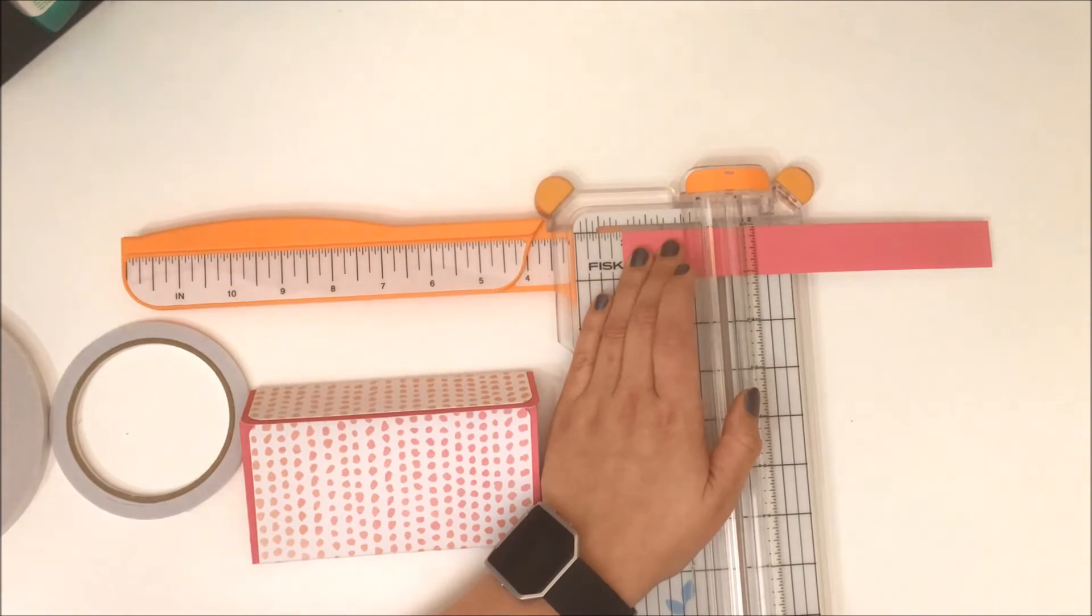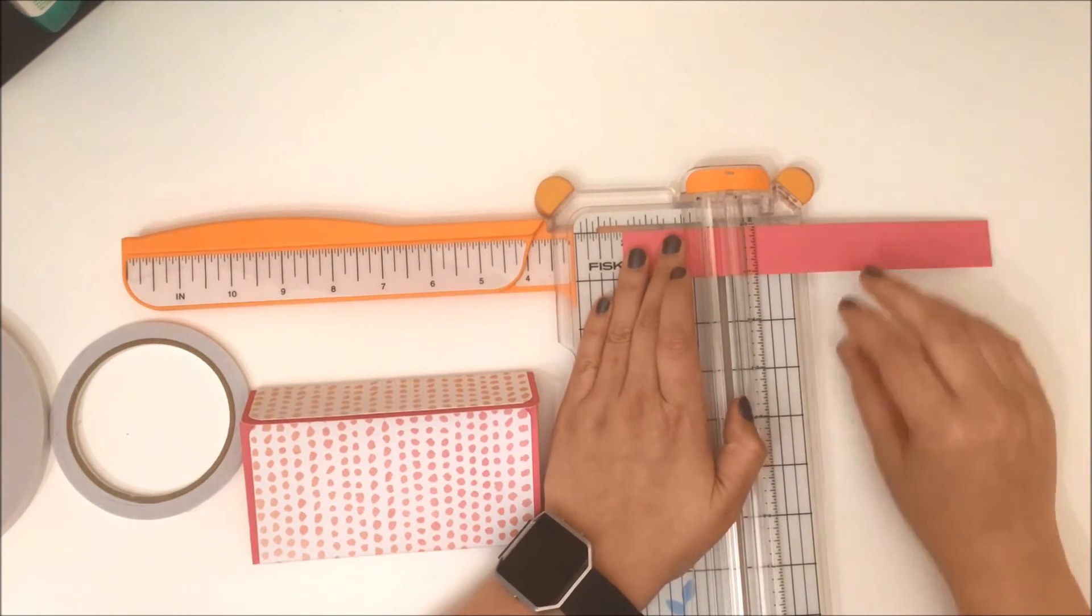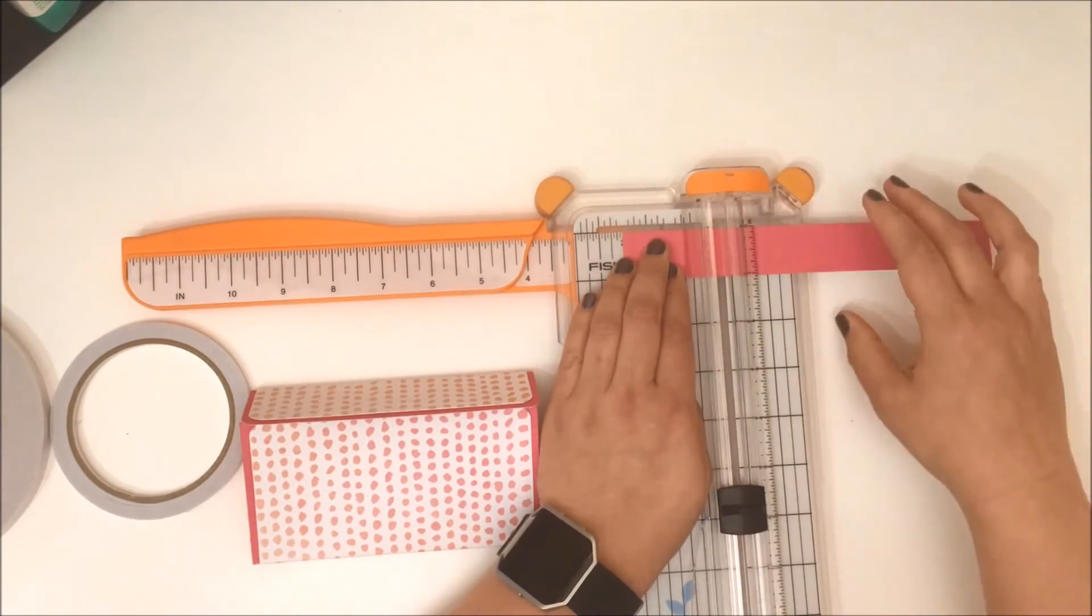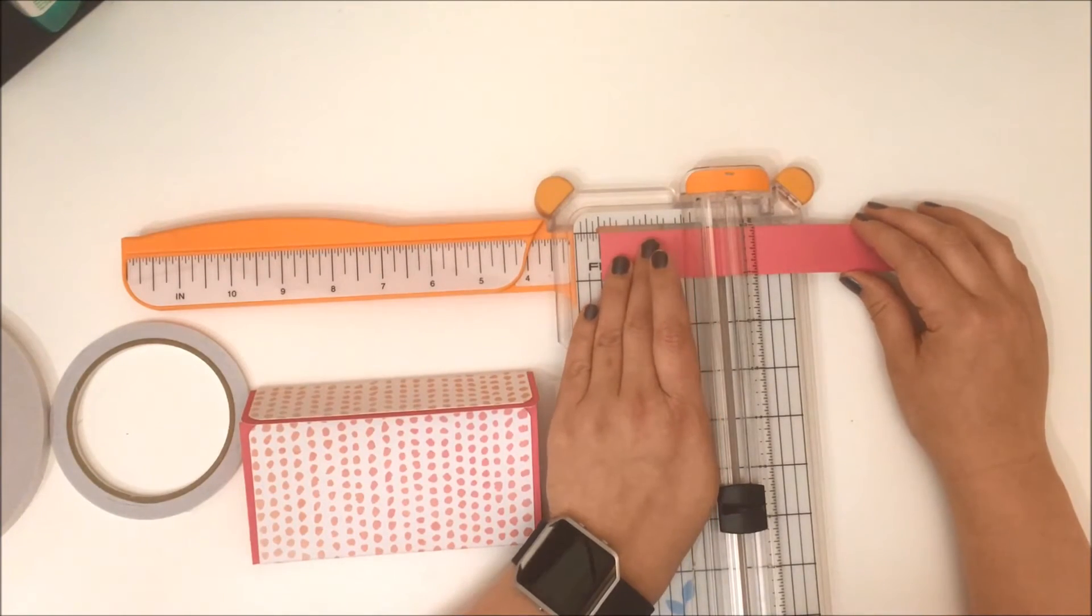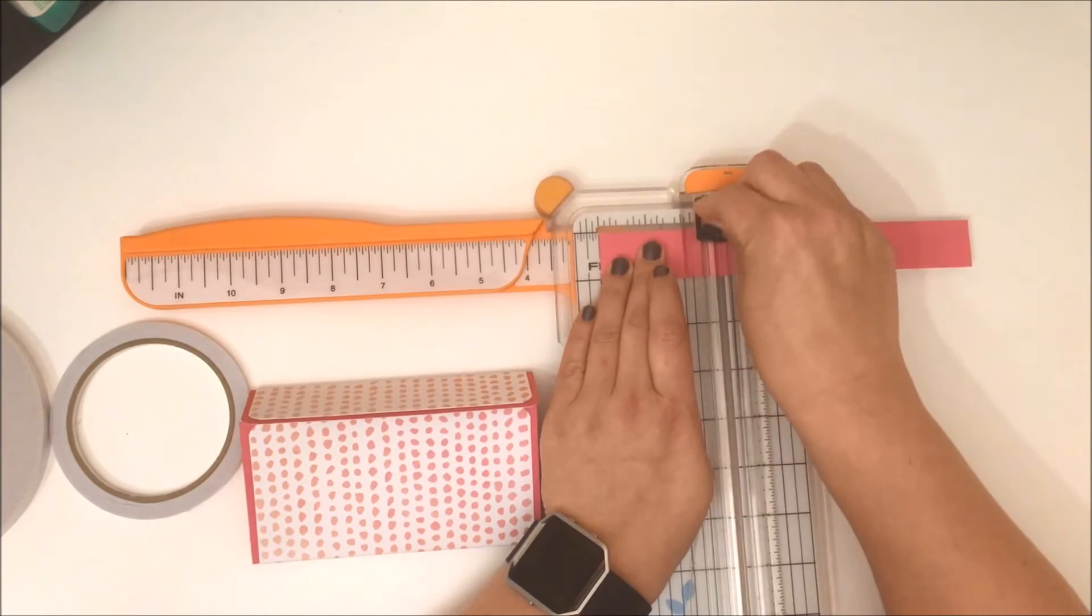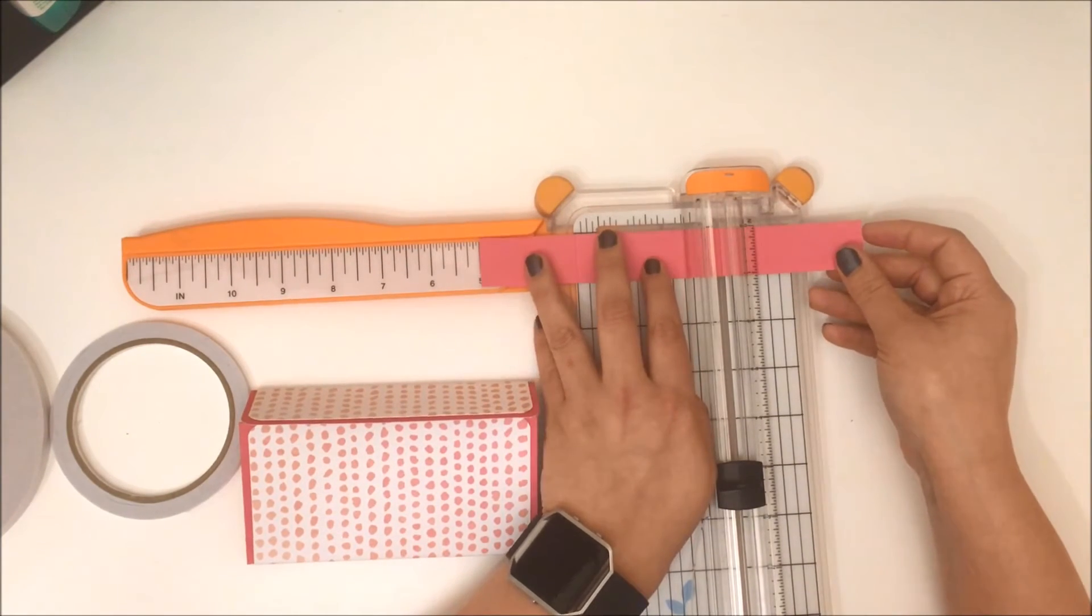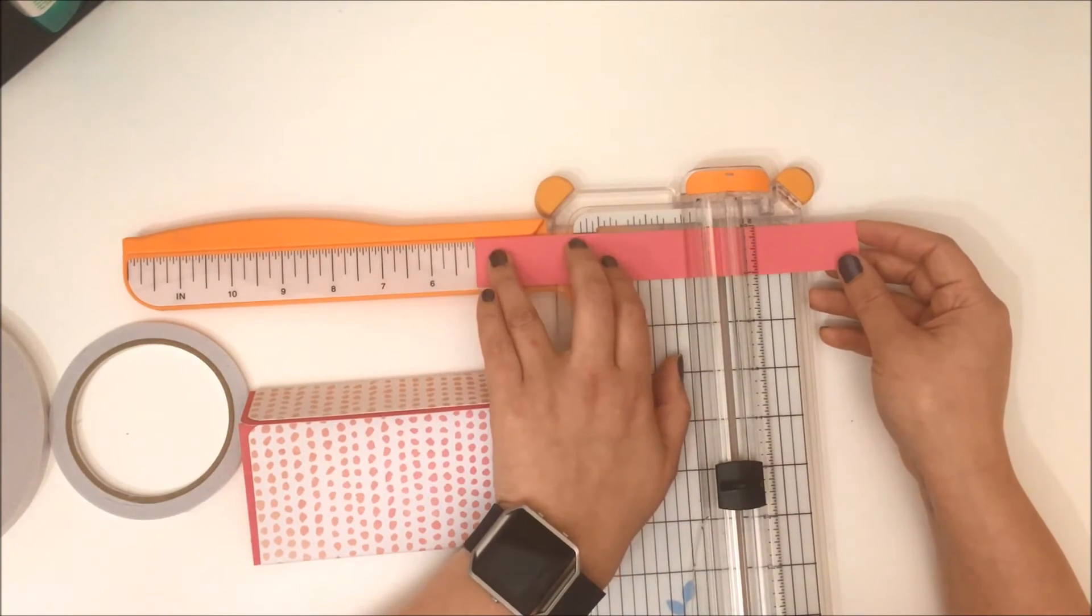My belly band measures one inch by eight inches. Then I scored at two inches, which I'm just doing now, scored at two inches and two and a half inches.